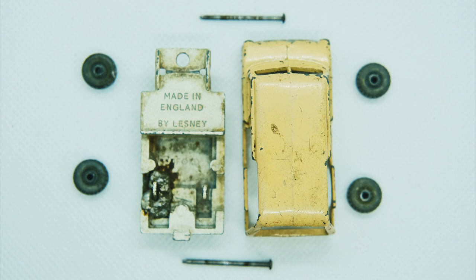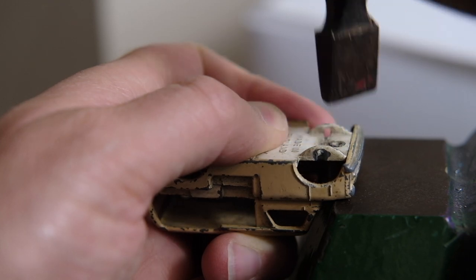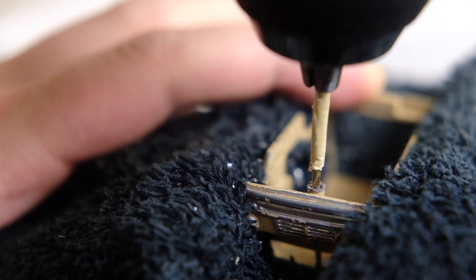So here are the parts that make up the model and here I'm flattening out that rivet so that the base is secured at the front as well as via the tongue and slot at the back.